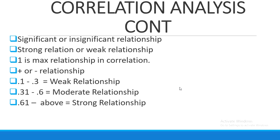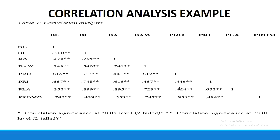This is an example of a correlation table in APA format. Variable names appear across the top and on the left side. You can see the value of one everywhere — this is the maximum value, so your correlation will always be less than one. For example, the correlation between brand image (BI) and brand loyalty (BL) is 0.310 with two stars, meaning significance at the 0.05 level, two-tailed. All correlations shown are positive as there is no minus sign.